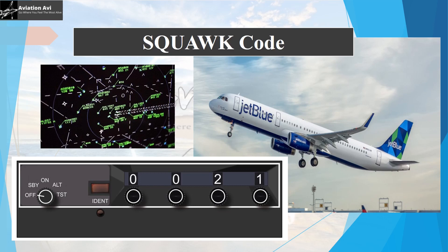Hello and welcome back to Aviation Avi. You may have wondered how air traffic controllers can distinguish between different aircraft on their radar screens. The answer is through the use of squawk codes.